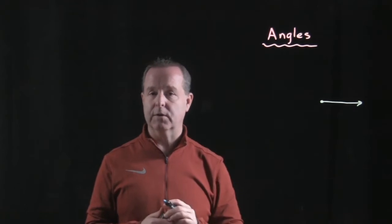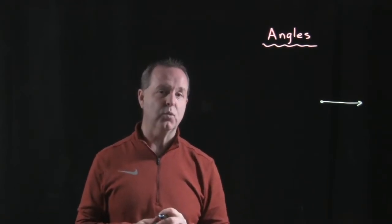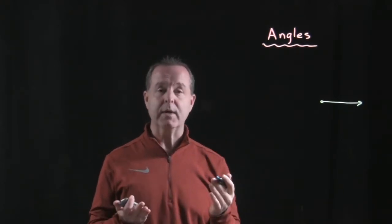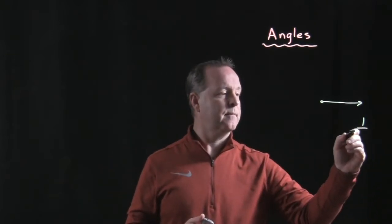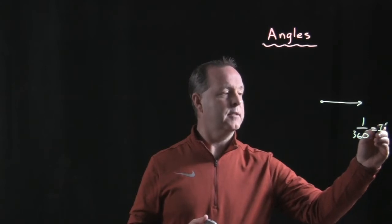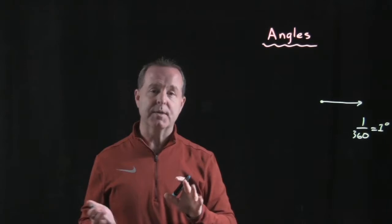We have described this as 360 degrees, or 360 degree revolution all the way around, where each degree is one 360th, equals one degree. Now there are certain types of angles that also have special names, so let's look at a couple of those right now.